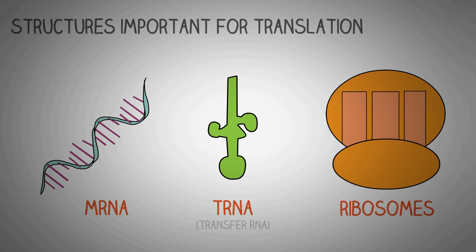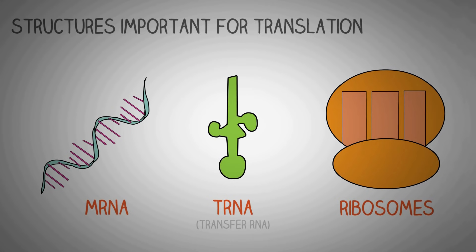The ribosomes read the message on the mRNA and the tRNA transfers individual amino acids to the ribosome according to the sequence of base pairs on the mRNA. These amino acids are then joined together by bonds to form a protein.